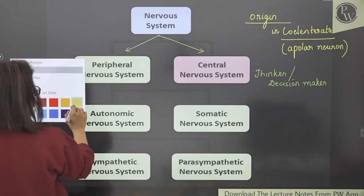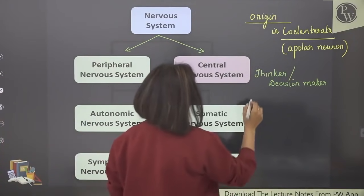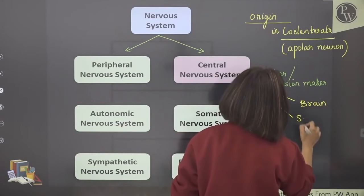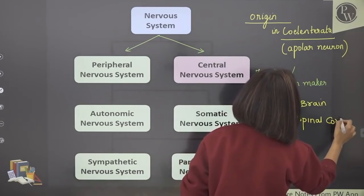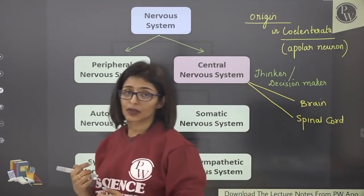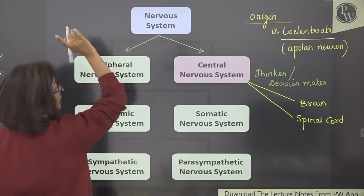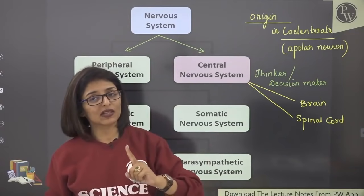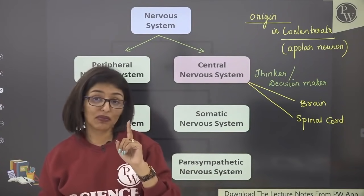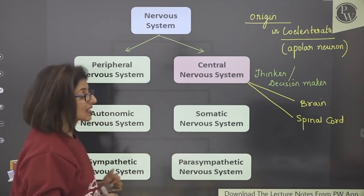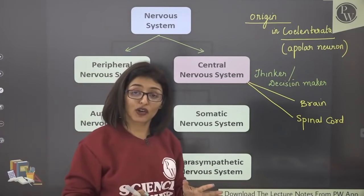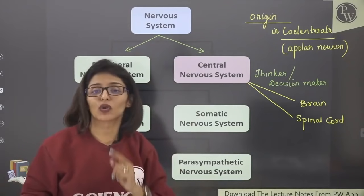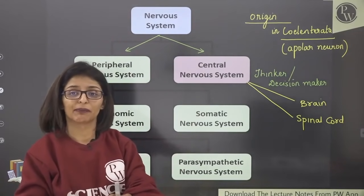The overall nervous system has ectodermal origin — but let me know in the comment section which single cell type in the nervous system is mesodermal in origin. Most nervous tissue and cells are ectodermal. CNS has two components: brain and spinal cord.